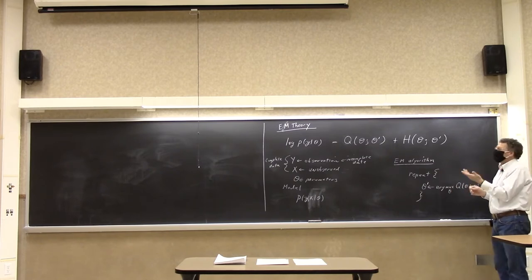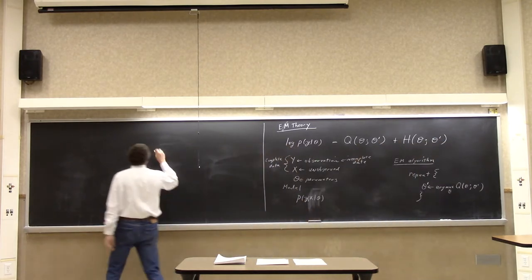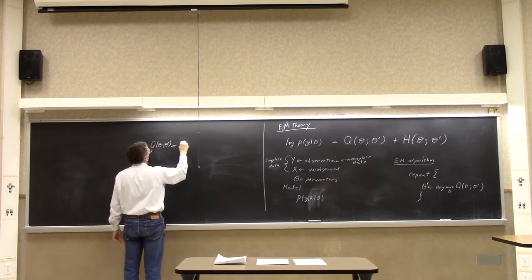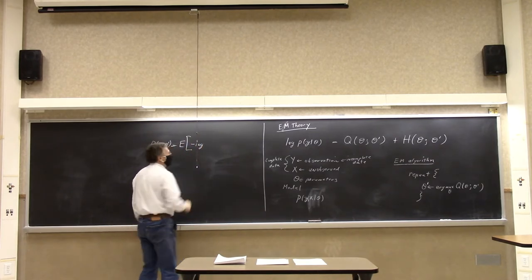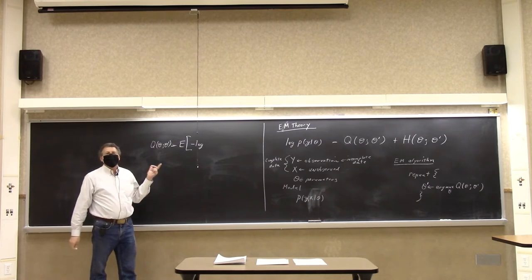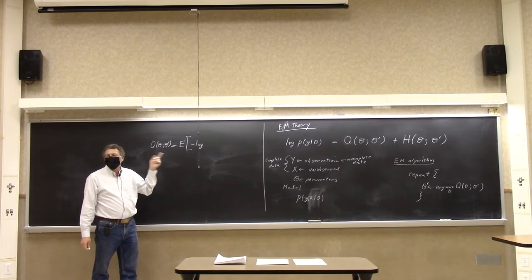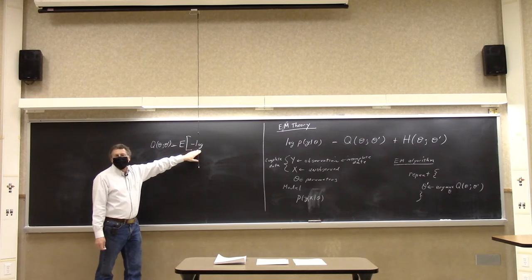The first step is when you calculate the functional form of Q, and the second is when you actually do the maximization. That's why it's EM, because the definition of Q is that Q of theta, theta prime is equal to the expected value of the negative log. It looks like a long expression, but it makes sense. What goes in here is the log likelihood I would have if I had the complete data.